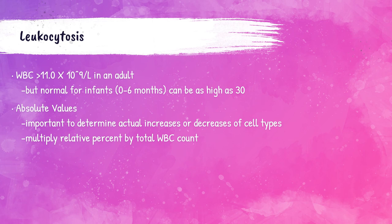For lymphocytes, you would take 0.12 — the relative count — and multiply by 5, the total white blood cell count, giving 0.6 as the absolute count. Absolute white cell counts are important for the physician to determine actual increases or decreases of cell types.